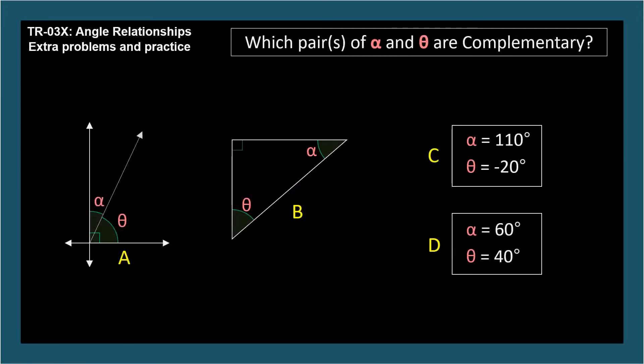Which pairs of angles, alpha and theta, are complementary? Pause and I'll give the answer. Scenarios A and B depict complementary angles. Complementary angles are positive angles that sum to 90 degrees. Scenario C sums to 90 degrees, but they aren't both positive. And scenario D sums to 100 degrees, instead of 90.